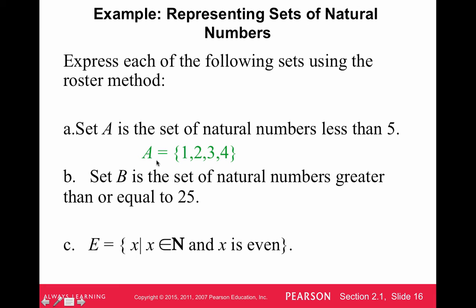Set B is the set of natural numbers greater than or equal to 25. Well, greater than or equal to 25 includes 25, but it goes up and up and never stops. So you'll see this dot, dot, dot at the end saying that it just continues forever and ever.